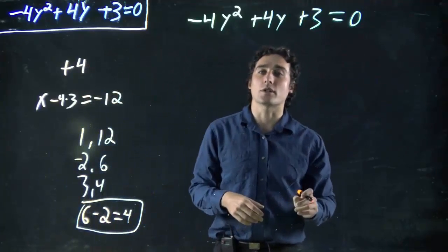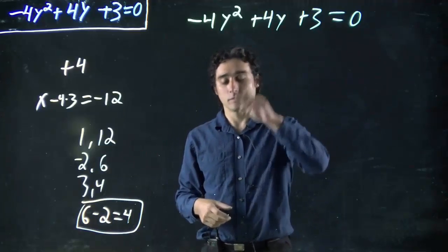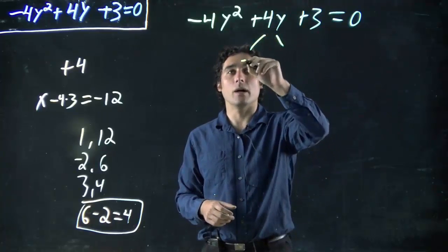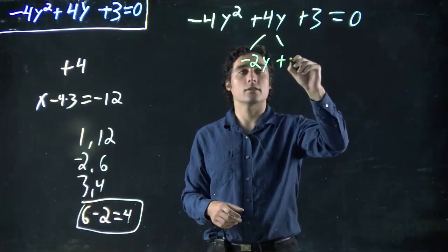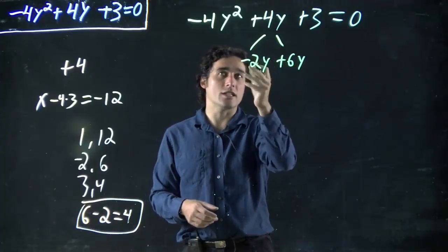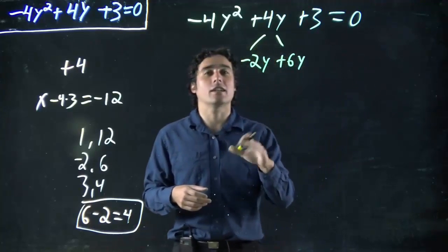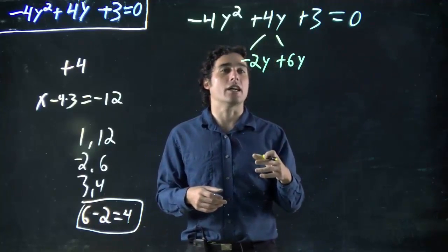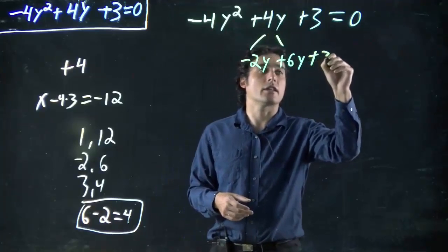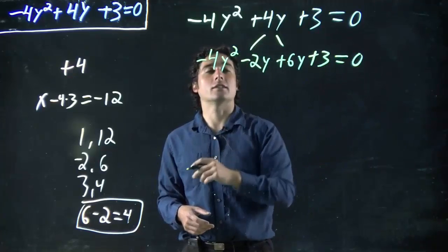Remember, we can't just jump right to the answer. What we're going to have to do is split this up. We're going to make this -2y + 6y. Remember, it doesn't matter which way I write this. I can switch these, it will still work out okay. And double check, -2 plus 6 would give us back the 4. The 3 is still there, the 0 is still there, and my -4y² is still there.